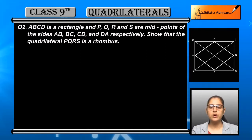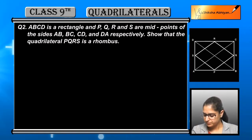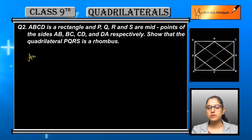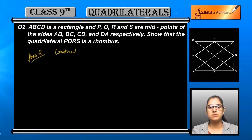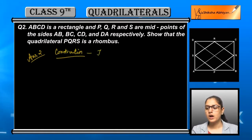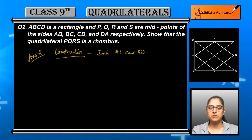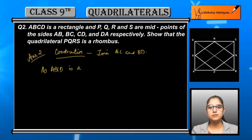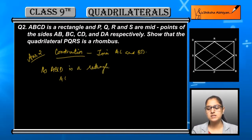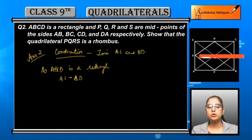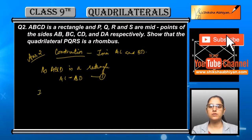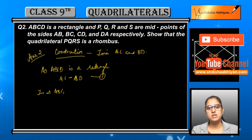Let us see how to prove this. The figure is already given — a rectangle with the midpoints marked. We will join both diagonals AC and BD for further use. Since ABCD is a rectangle, we can say that AC is equal to BD, because the diagonals of a rectangle are equal. This is equation number one.